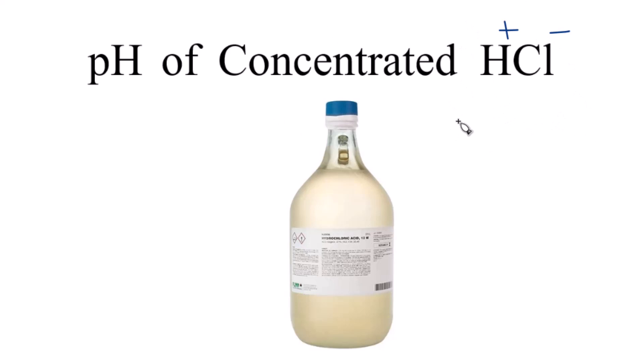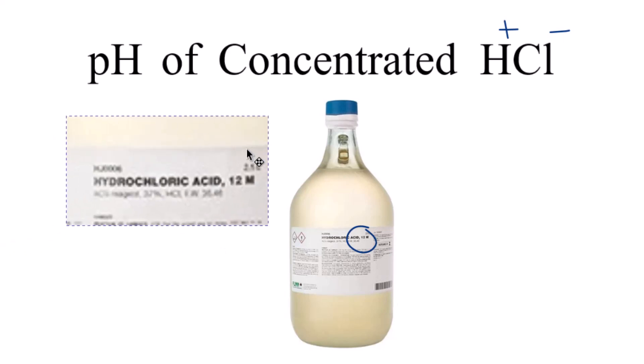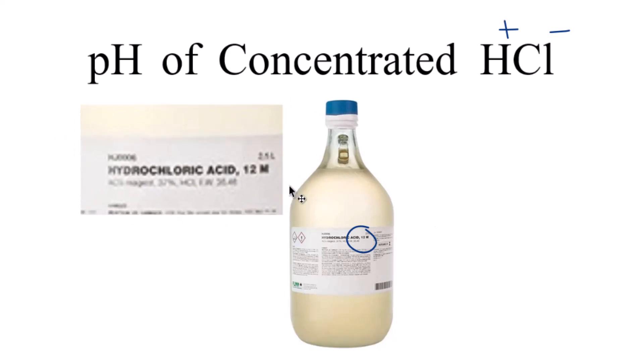If we want to find the pH though, we really need to know the molarity of concentrated hydrochloric acid. So here's our bottle. You probably can't see it right there, but it's 12 molar. Here you go. So this is a 12 molar solution. Concentrated hydrochloric acid is 12 moles per liter.